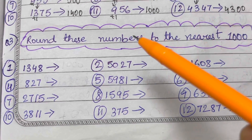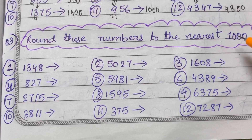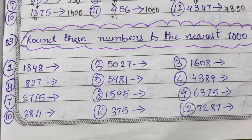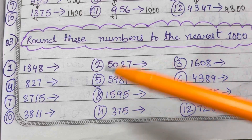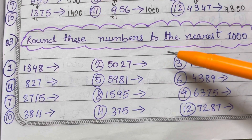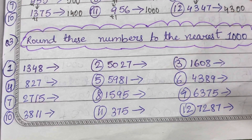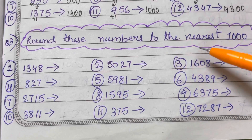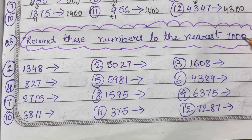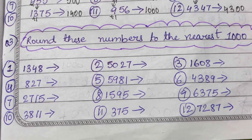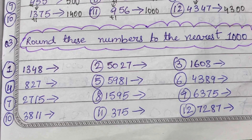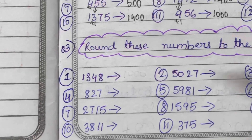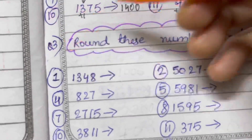How to round off numbers to the nearest thousands place? As you have seen in my previous two videos, we rounded off numbers to the tens place and hundreds place. Now we are going to round off to the thousands place. So let's start with the first one.